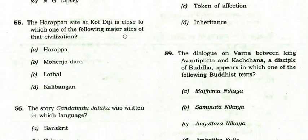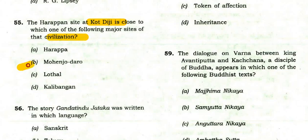The Harappan site at Kot Diji is close to which major site of that civilization? The right option is B: Mohenjo-daro.